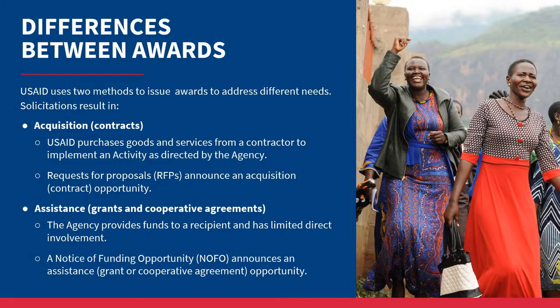USAID uses two methods to issue awards to address different needs: acquisition, through contracts, and assistance, through grants and cooperative agreements.